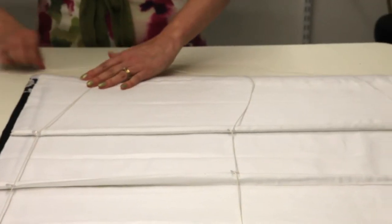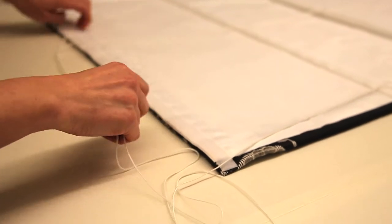So now all the cords are threaded through the rings, we're ready to put our blind on a baton which is fixed to the door.